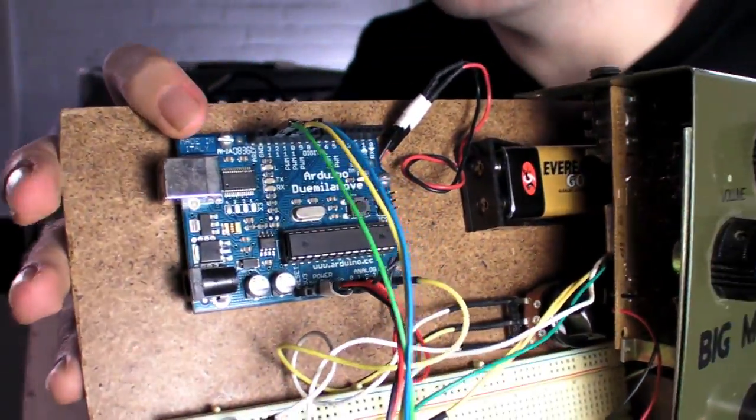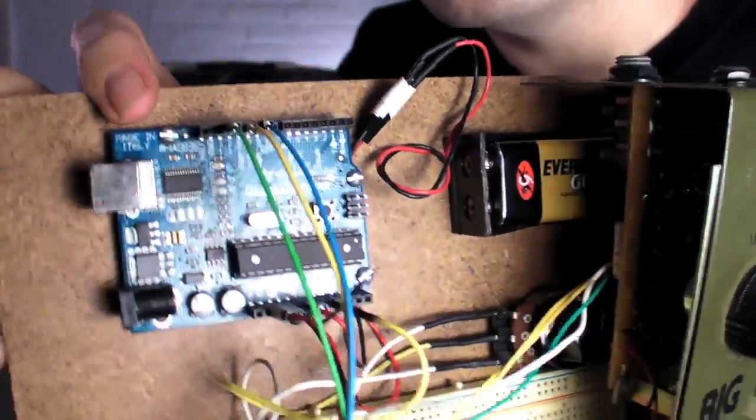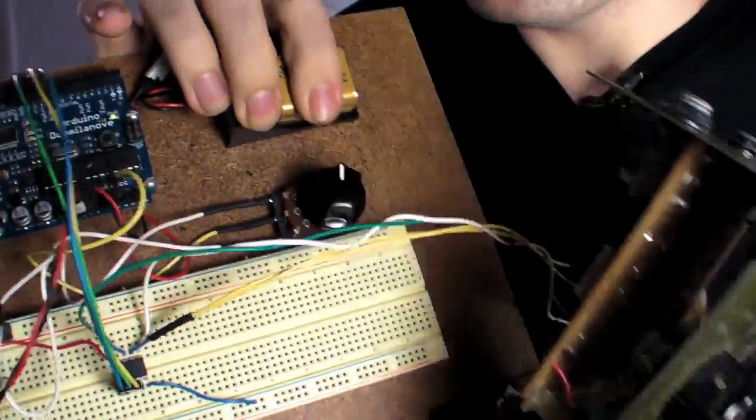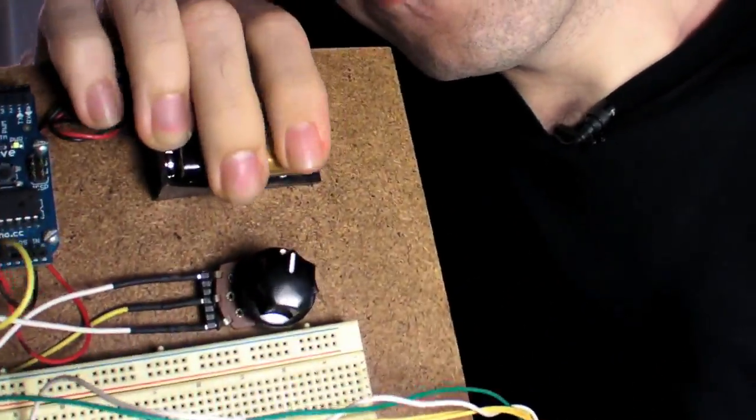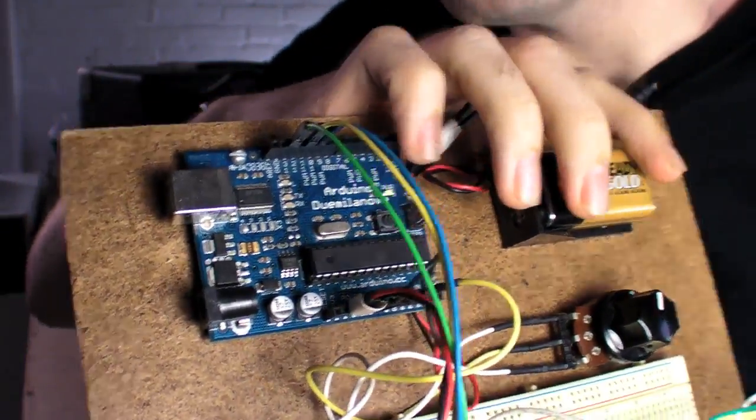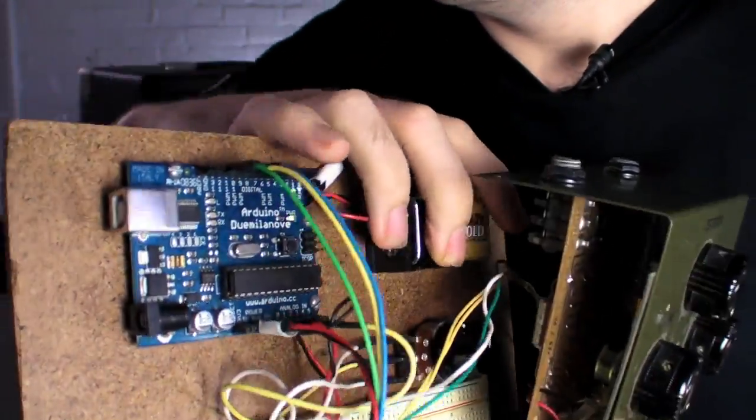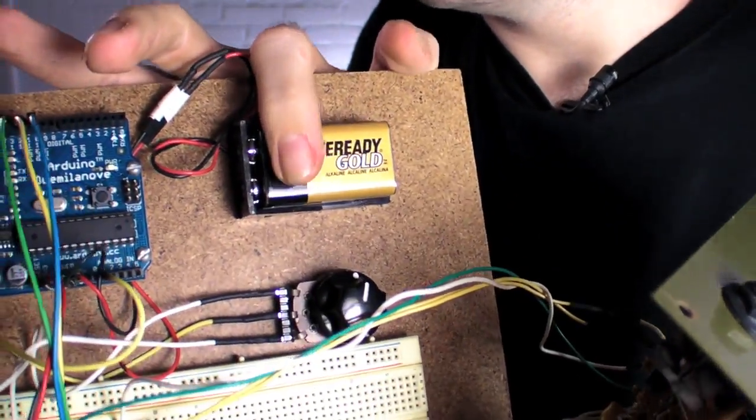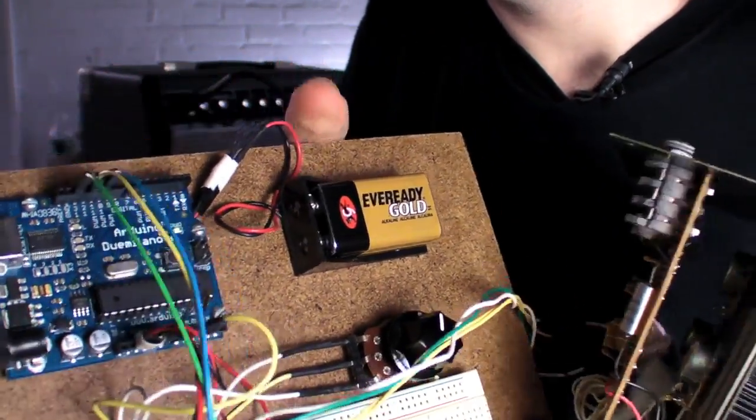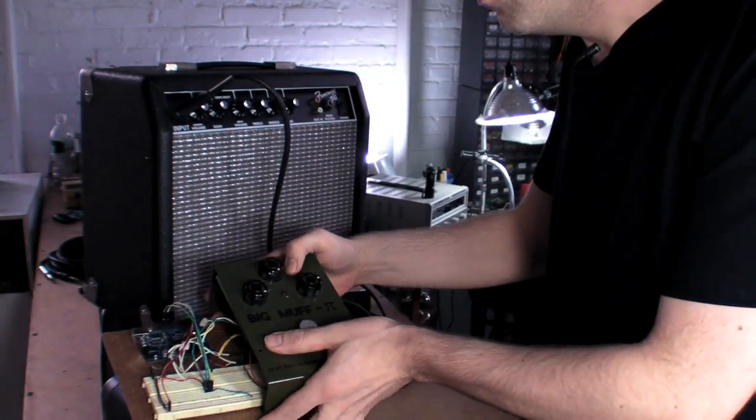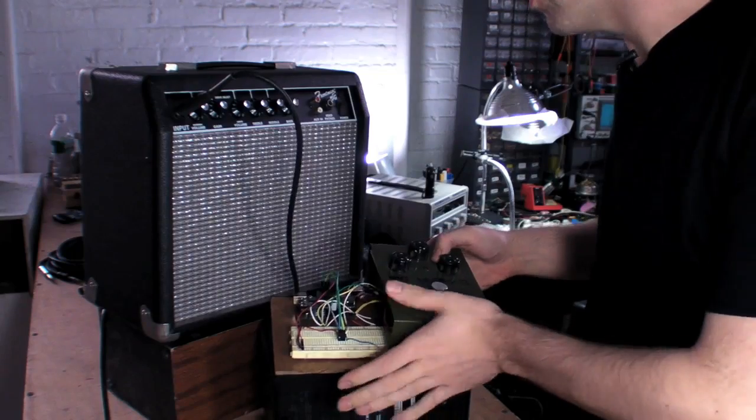I've programmed the Arduino with the sketch I wrote and the waveform values, and I've also wired up a potentiometer and connected it to analog one on the Arduino. My sketch takes the value from that pot to determine how fast the distortion turns up or gets turned down. Let's see if it all actually works.